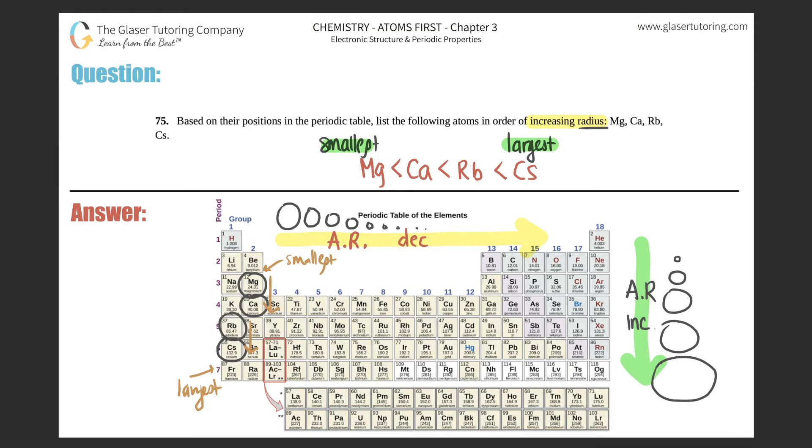Now you might be wondering about this little dip here, because calcium is in group two and rubidium is in group one. But remember, as you go from left to right, you decrease as well, so that technically means calcium is still smaller than rubidium.